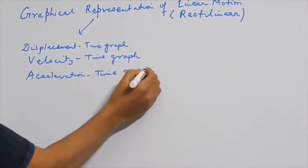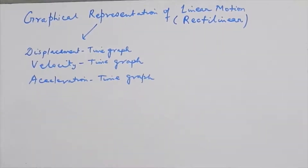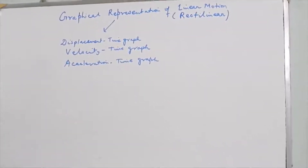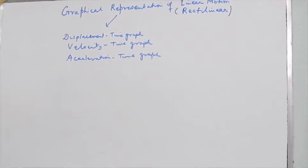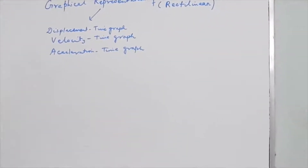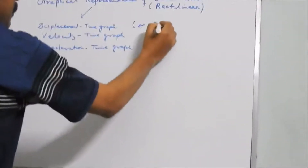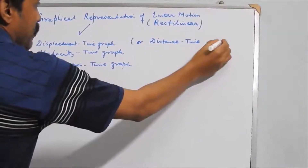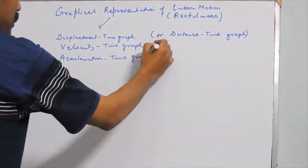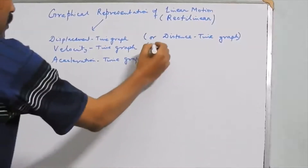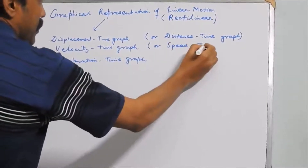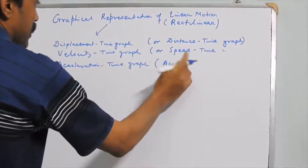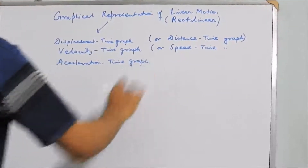These are the three parameters associated with the description of linear motion or motion along a straight line. Because we are studying motion along a straight line where the direction of motion is not changing, the displacement-time graph and distance-time graph mean the same thing. Similarly, the velocity-time graph can be called the speed-time graph, and the acceleration-time graph remains the same.